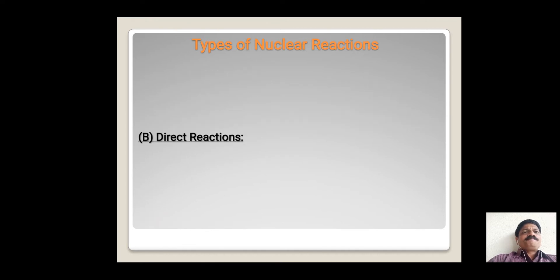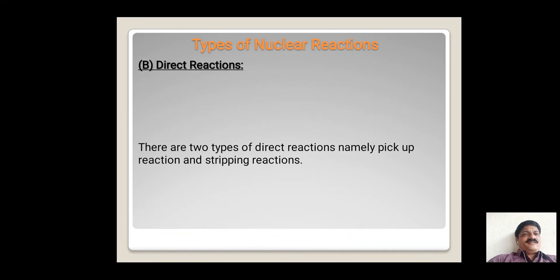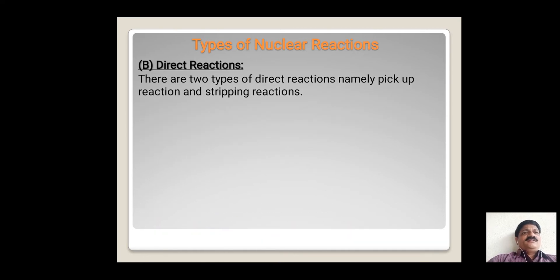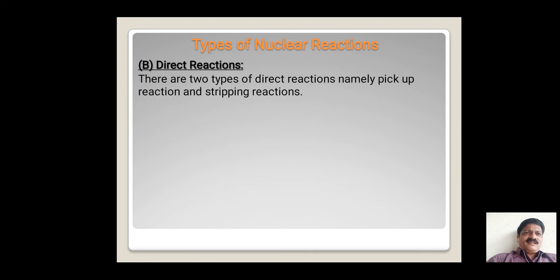Another type of nuclear reaction is direct reactions. There are two types of direct reactions: pickup reactions and stripping reactions. This type of nuclear reaction divides into two categories — pickup nuclear reactions and stripping nuclear reactions.